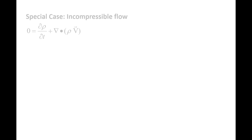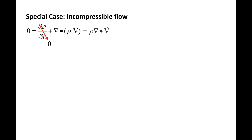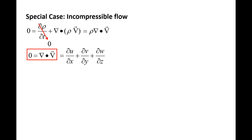There are a couple of special cases that arise frequently in fluid dynamics. The first is incompressible flow, in which the density does not change significantly in the region of interest. This means the time rate of change of density is equal to zero. Additionally, density can be pulled out of the dot product since it does not vary in space. Dividing both sides by density, we find that the divergence of the velocity field is equal to zero for incompressible flows. Expanding the divergence of velocity, we obtain that partial u partial x plus partial v partial y plus partial w partial z is equal to zero.